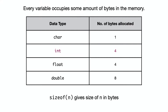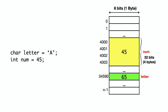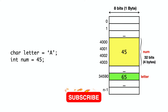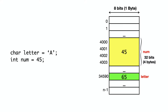If we want to discuss the size of a variable, we can use the sizeof operator. We pass the datatype or variable as an argument, and it returns the number of bytes. For example, we have a character variable letter equals to 'a', or an integer variable num equals to 45.